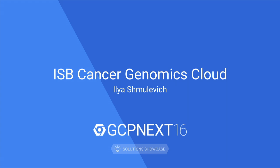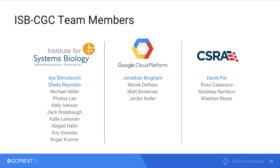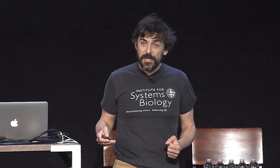Hello, everyone. My name is Ilya Shmulevich from the Institute for Systems Biology in Seattle, Washington. I'd like to tell you about our effort, the ISB Cancer Genomics Cloud. We've been part of the Cancer Genome Atlas project for about six years, which has generated very large amounts of comprehensive cancer genomic data — unprecedented in size and scope. As a data analysis center, we've been building data integration and analytical tools, as well as interactive visualization and exploration tools to put back into the hands of the cancer research community.